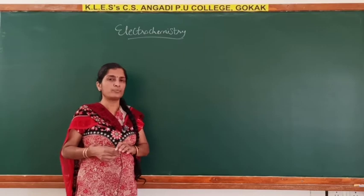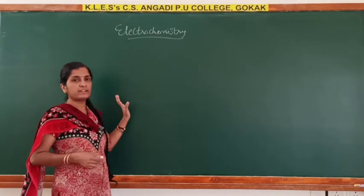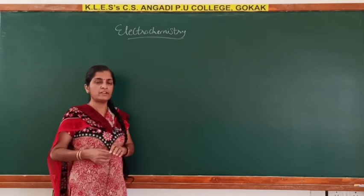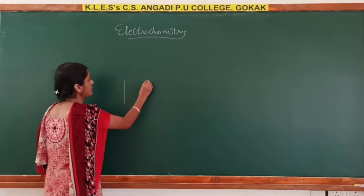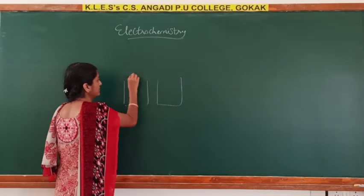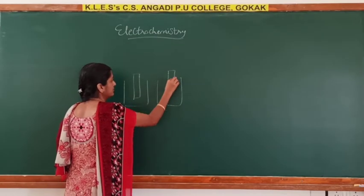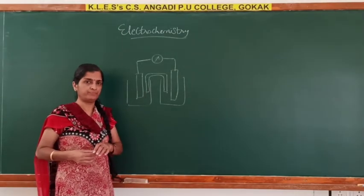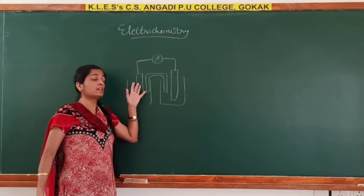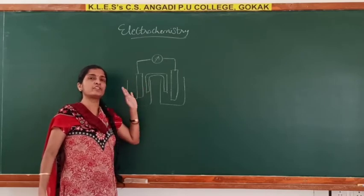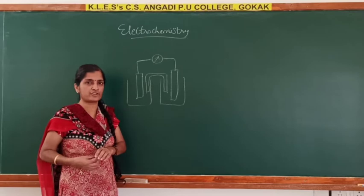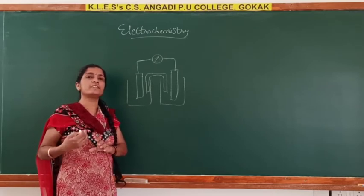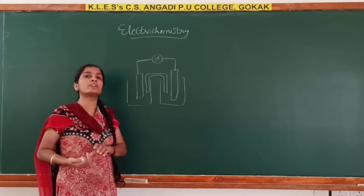Work is done in moving the charges across a potential difference between two electrodes. There is a relationship between the conversion of chemical energy into electrical energy and the decrease in the free energy of the reaction. Let's see how the free energy of the reaction decreases when electrical work is done.